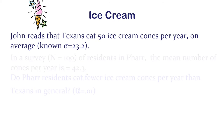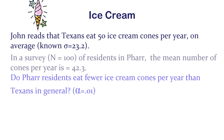Another situation: apparently Texans eat 50 ice cream cones per year on average — that's the Texas state average — with a standard deviation of 23.2. The residents of far Texas, way down on the border, have a really high obesity rate in that city.